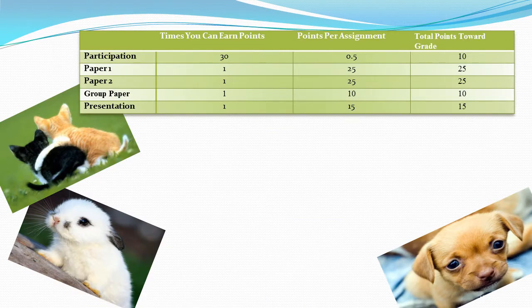Now let's move on to another example. This class is different because it has a participation grade, but you don't have to participate every single day to max out that grade. There are 30 times when you can earn points, and each participation day is worth half a point — 30 times 0.5 is 15 — but you max out at 10. So your teacher is automatically dropping a bunch of your lowest participation grades.